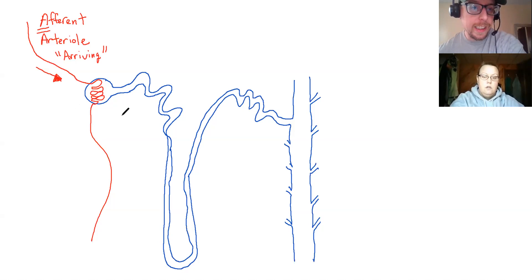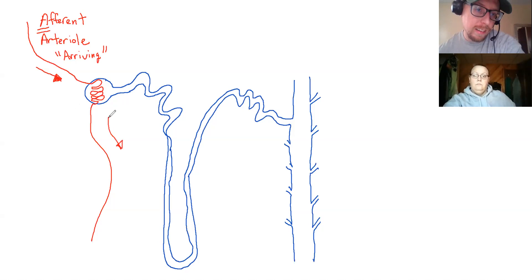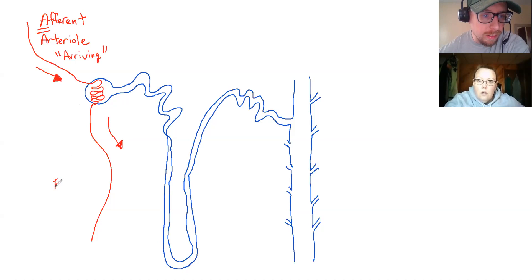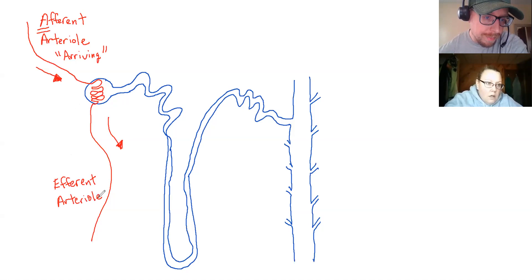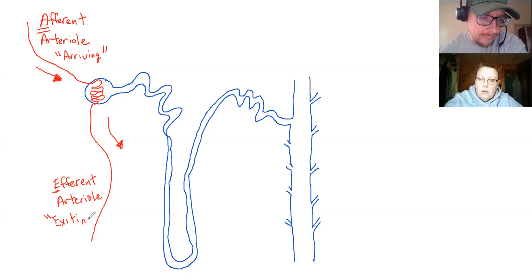Then you have a blood vessel that's carrying the filtered blood away from the glomerulus, and this blood vessel right here is called the efferent arteriole. With the efferent, the E - I think of it as the blood exiting the glomerulus. So this is blood that's already been filtered.